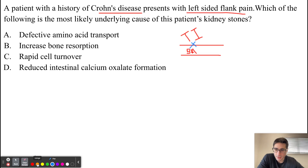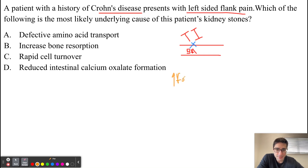Bile acids are extremely important for the absorption of fats. If we have lower levels of bile acids, we're going to have an increase in fat accumulation in patients with Crohn's disease, because we're not able to absorb fat — so the fat is just going to accumulate.